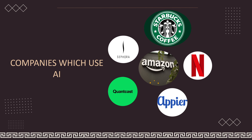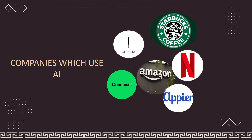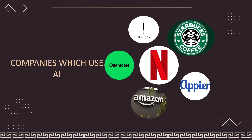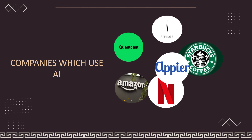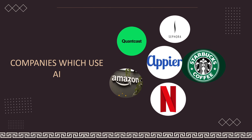Here are a few companies which use AI in marketing. Amazon uses AI to increase and decrease the price of their products. Netflix uses AI to go through your browsing history and check what type of series or films you are interested in, and they recommend it to you. Appia uses AI to solve their business problems — it is actually an intelligent way to use AI.